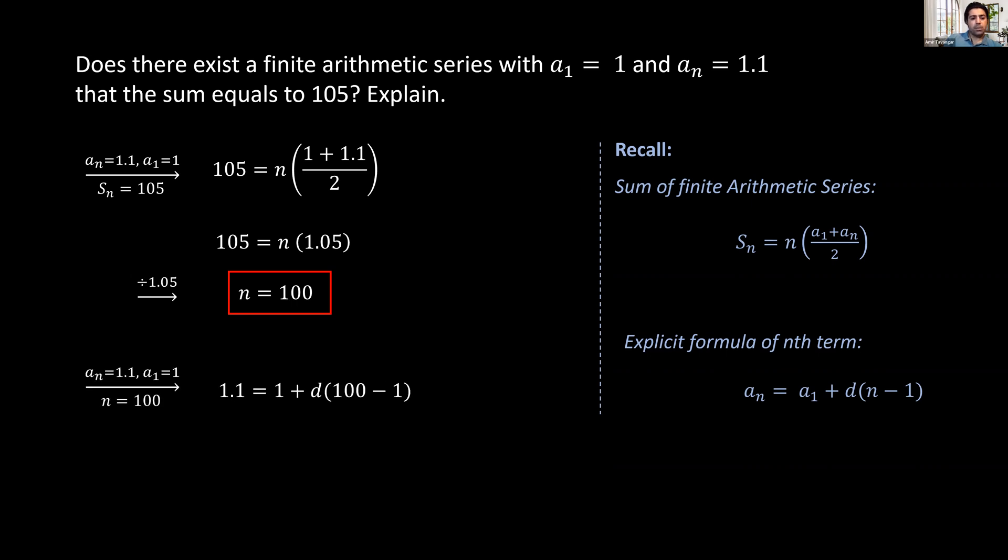So we can substitute the first term, last term, and n equal to 100. We rearrange and solve for d to be 1 over 990.